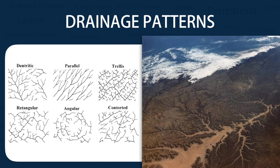Drainage Patterns. In geomorphology, drainage systems, also known as river systems, are the patterns formed by the streams, rivers and lakes in a particular drainage basin. They are governed by the topography of the land, whether a particular region is dominated by hard or soft rocks, and the gradient of the land.